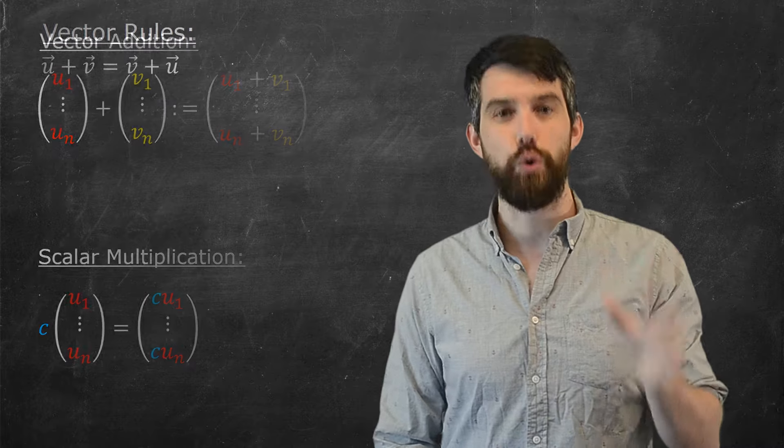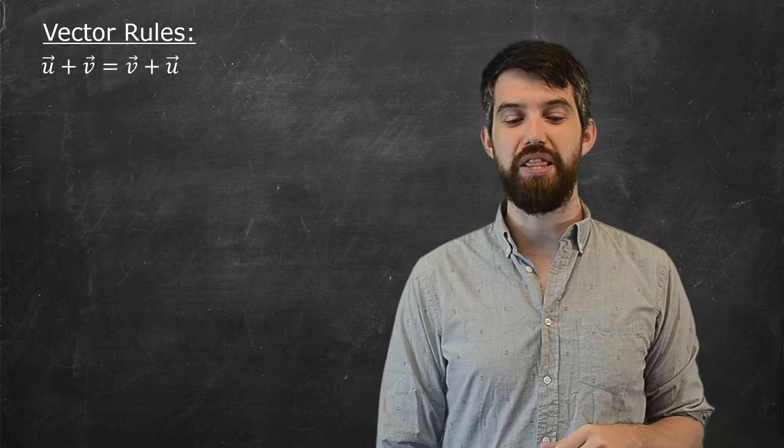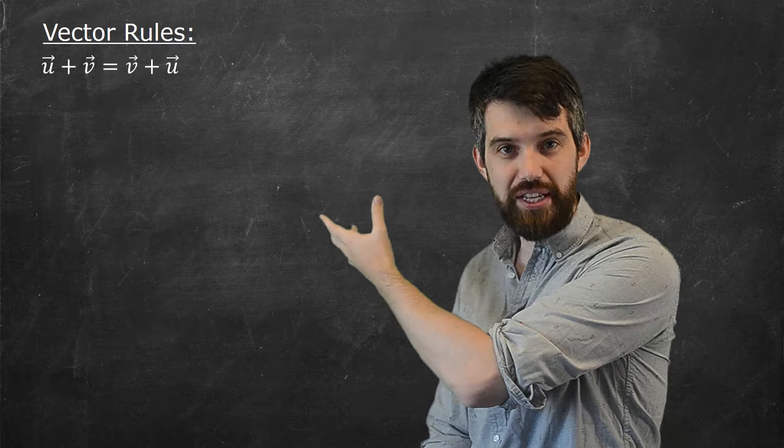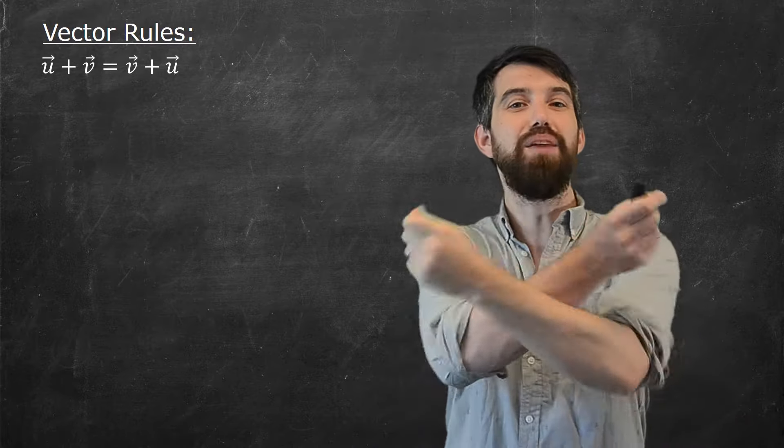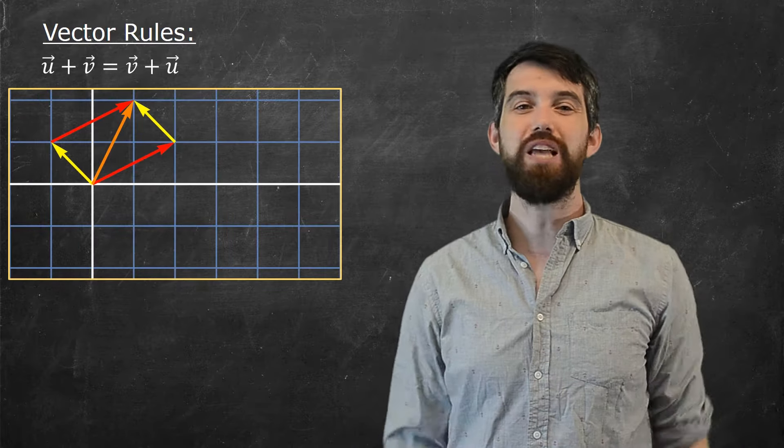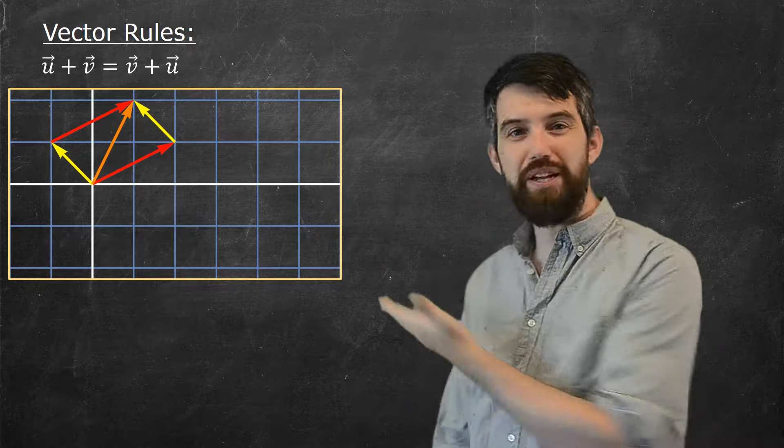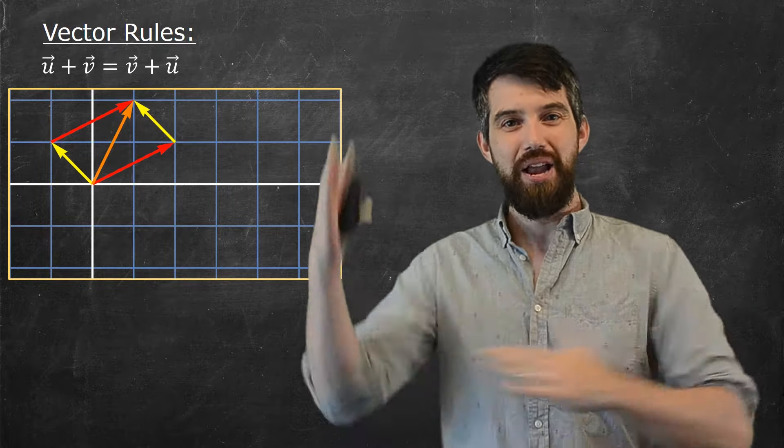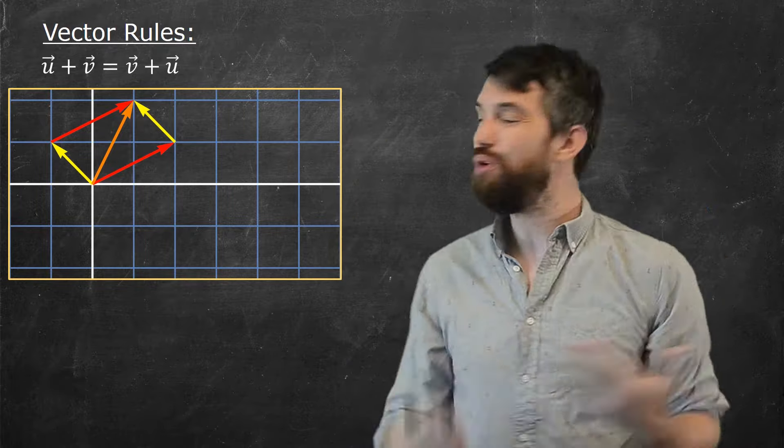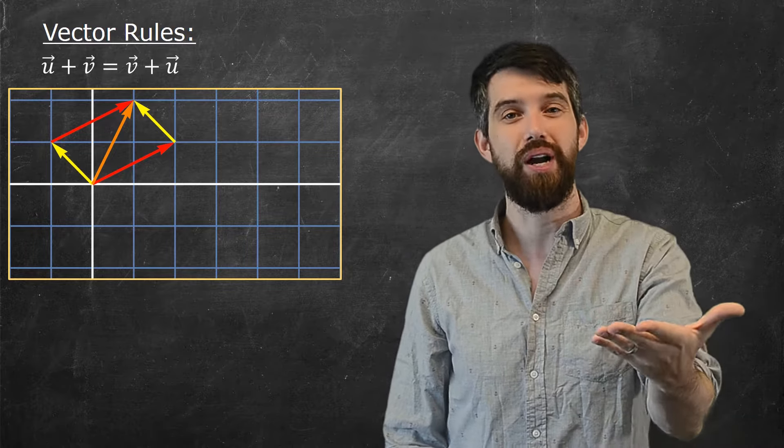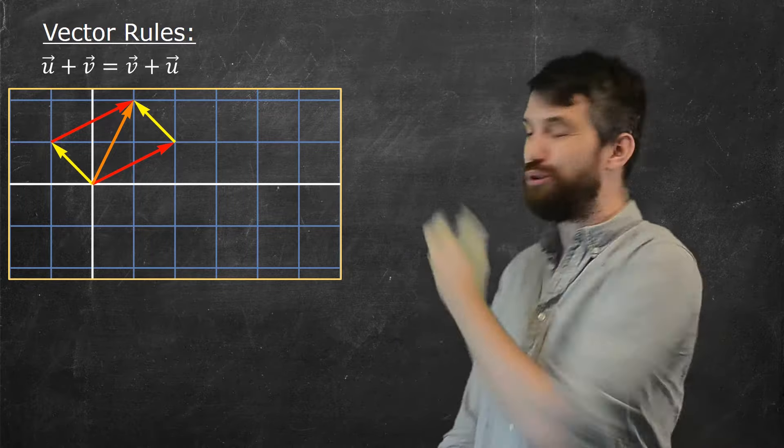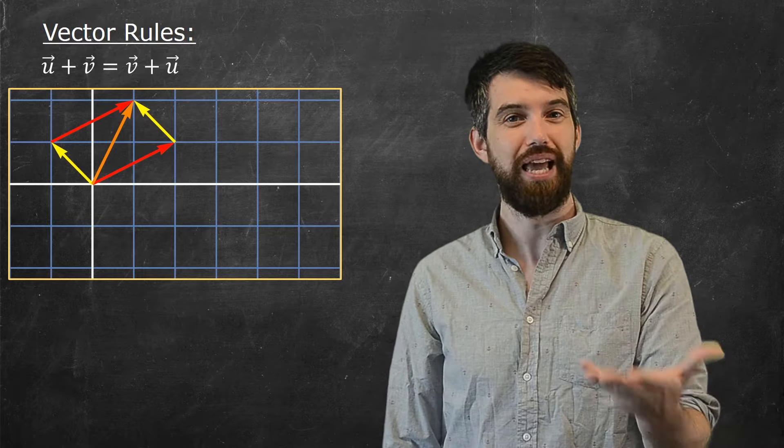There was one that we covered already in the videos. This was the idea of commutativity of vector addition. It says that I can multiply it either way. For example, we've seen geometrically that there was this nice picture where you had this parallelogram, and you could add the two vectors in either way and you got to the same spot. It didn't matter what the order of the vector addition was. You could prove the same kind of rule algebraically as well.